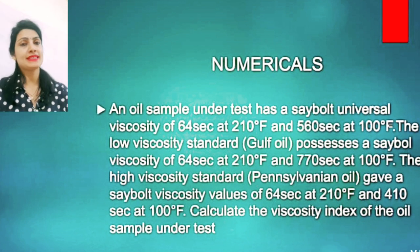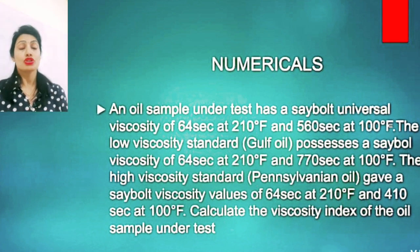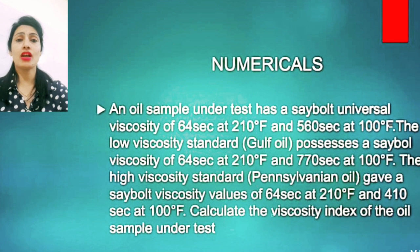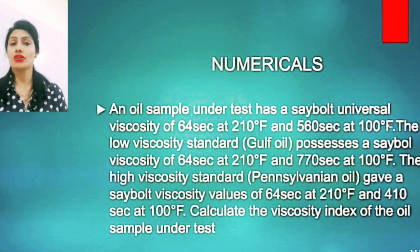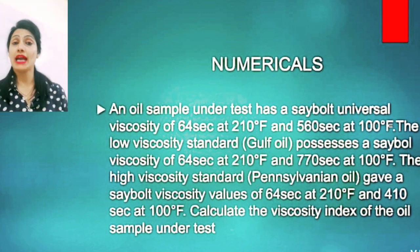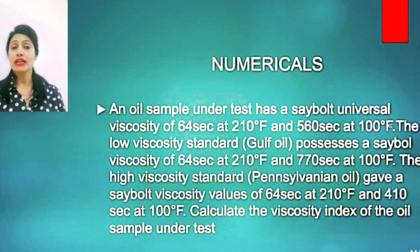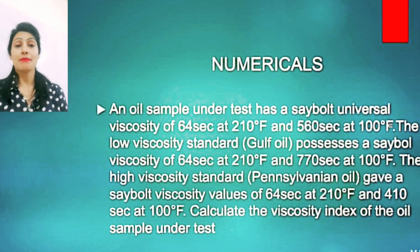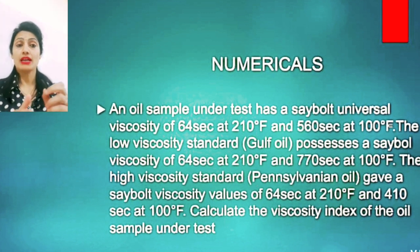First, we find U, L, and H. L is the low viscosity standard oil — Gulf oil or naphthenic-base Gulf oil. H is the high viscosity standard oil — Pennsylvanian oil. Please keep this in mind.